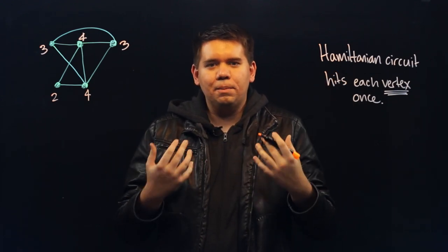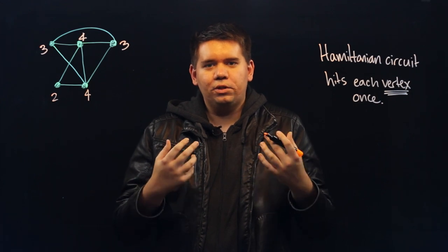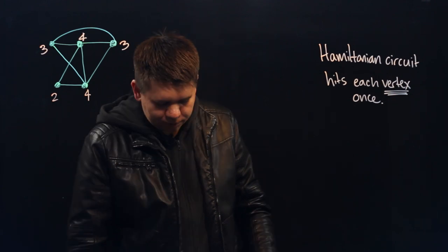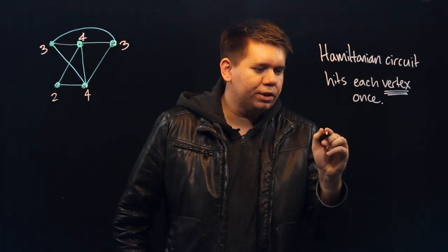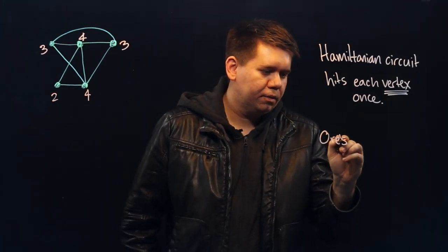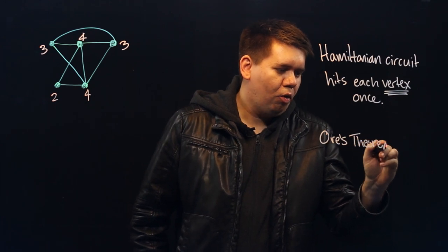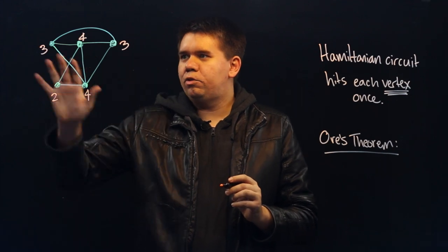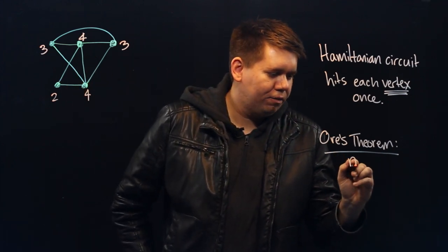However, there are some simple tests that can help us to find some cases where they exist. One of those tests is called Ore's theorem, dating from 1960. Ore's theorem says, if you have some graph that has n vertices...